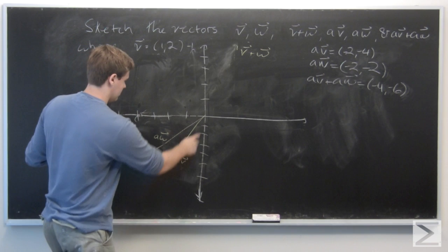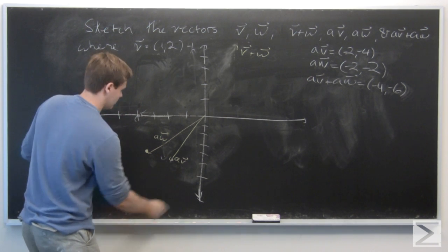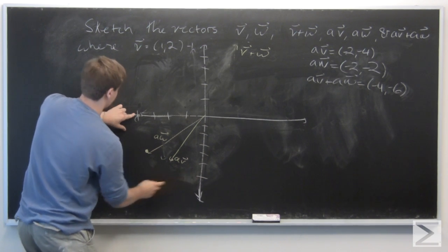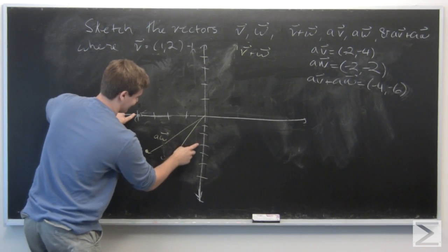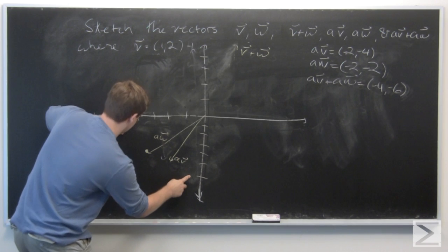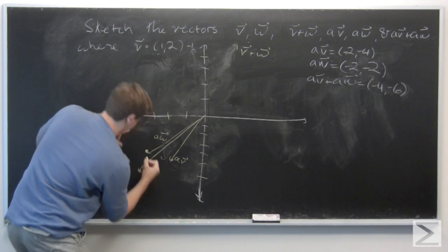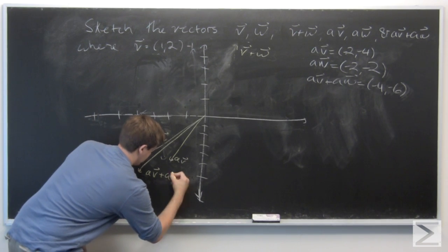And we have that 1, 2, 3, 4, 5, 6. And then we have that 1, 2, 3, 4, 5, 6. And then this is a·v plus a·w.